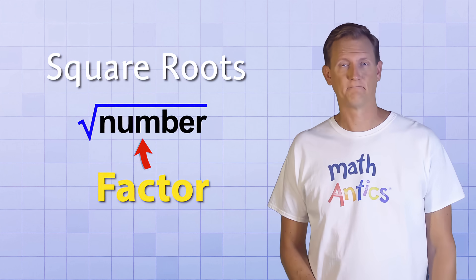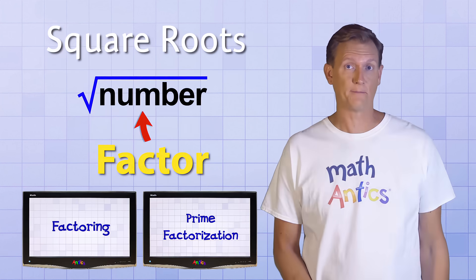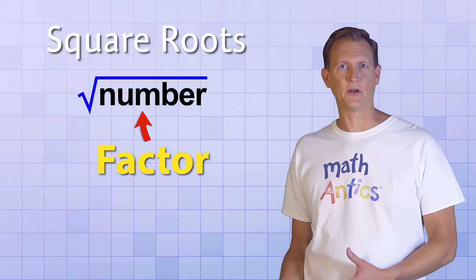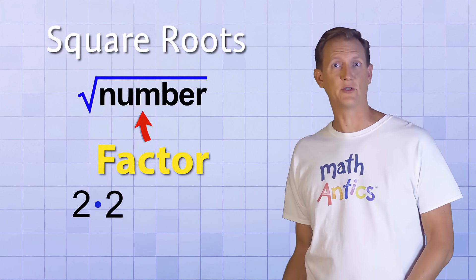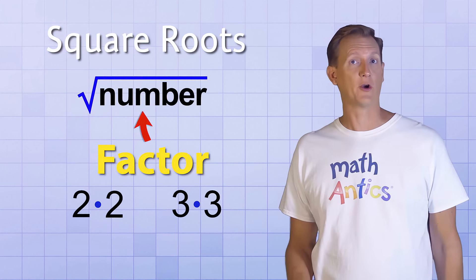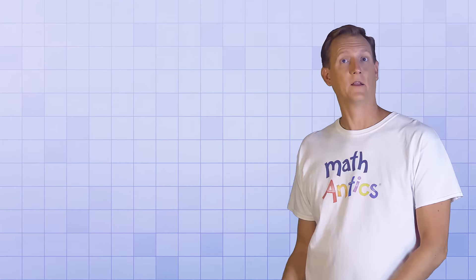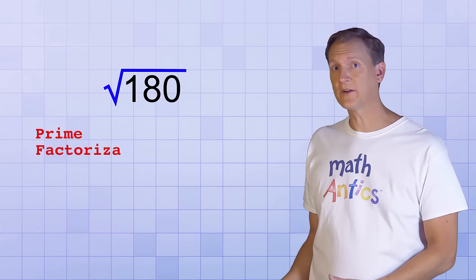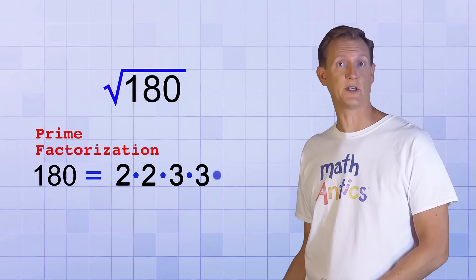And how would you find out if there are any perfect squares hidden in that number? The key is to factor it. If you've forgotten how factoring works, you can watch our previous videos about it for help. Factoring will reveal if there's any pairs of the same factor being multiplied together, like 2 times 2 or 3 times 3. If there are, you've found a perfect square hiding in that number and you can simplify it.